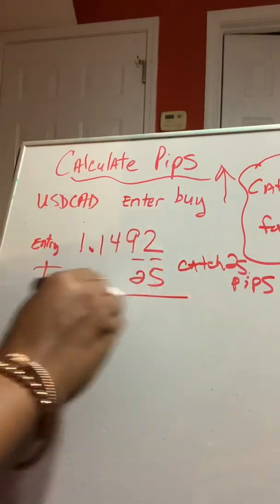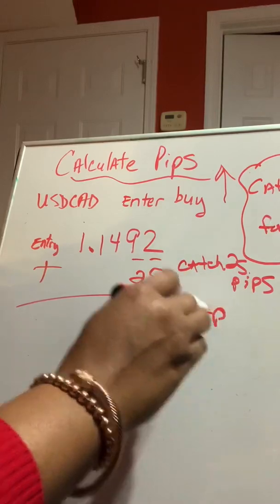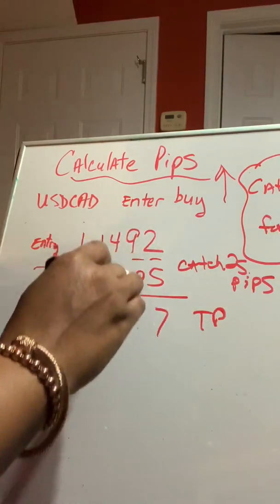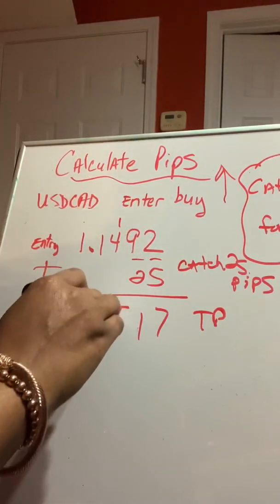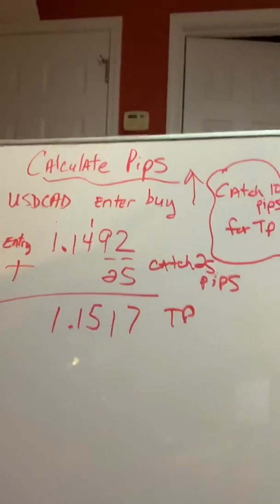I'm going to add 25 pips because I want the market to go at 25 pips. Now, I'm going to set my take profit at seven, carry my one. This is my new take profit. Okay? So, that's my new take profit if I was trying to catch 20 pips.